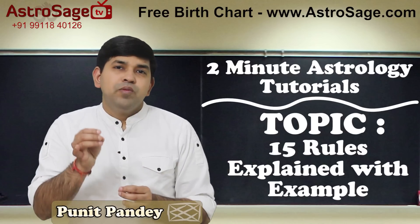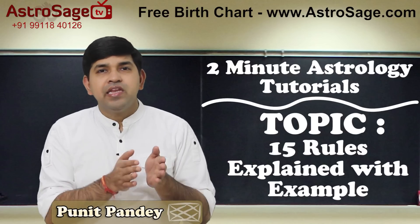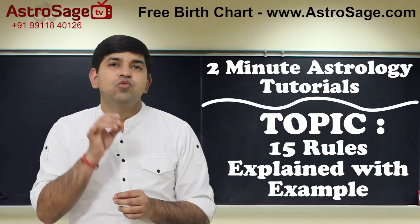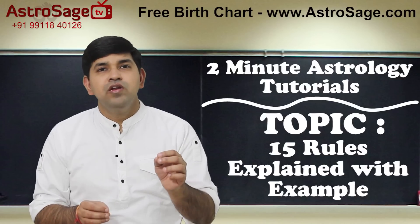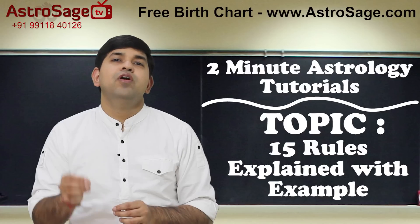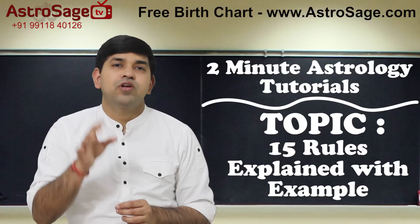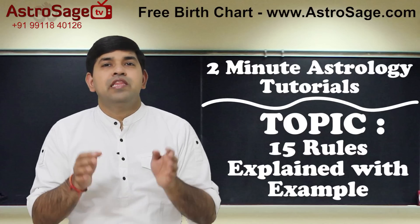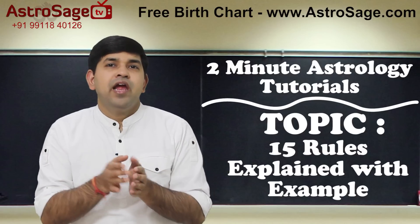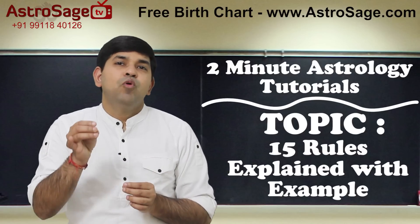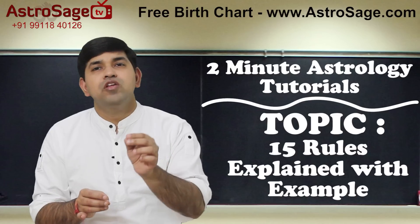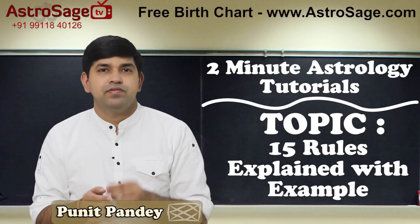To simplify this process of combining, let us go through each rule and assign plus 1 for a good outcome and minus 1 for a bad outcome. Then we can add these numbers together, and the more positive the number, the more positive results the planet will give.